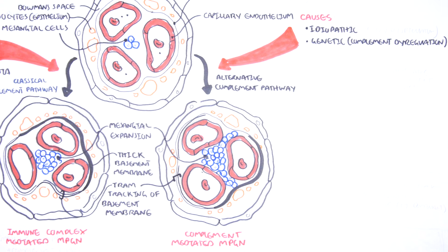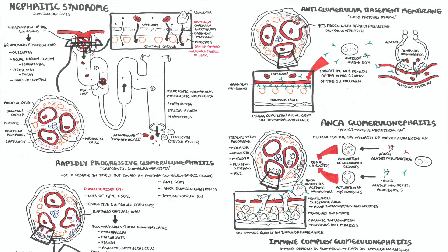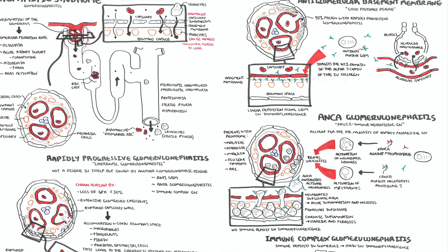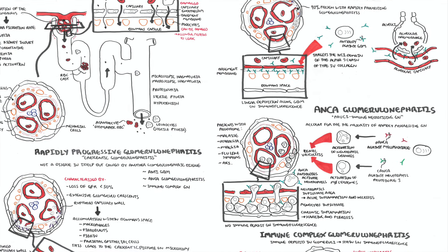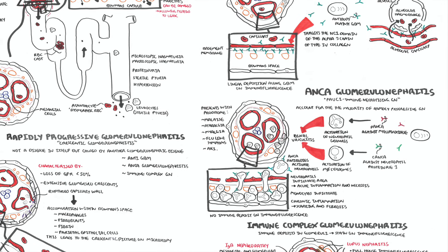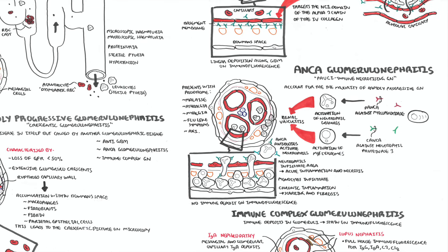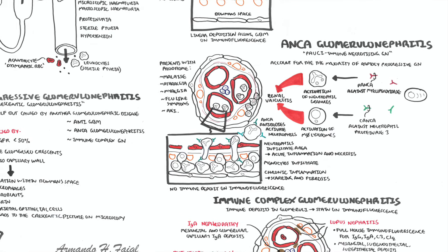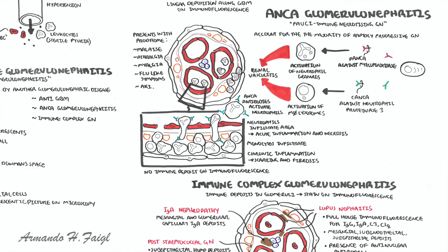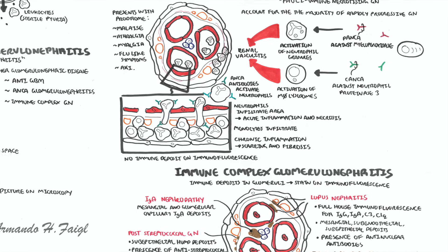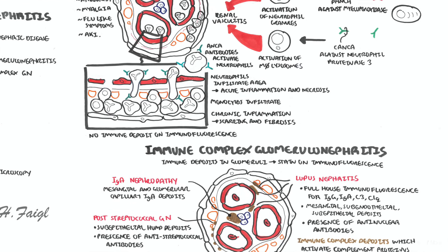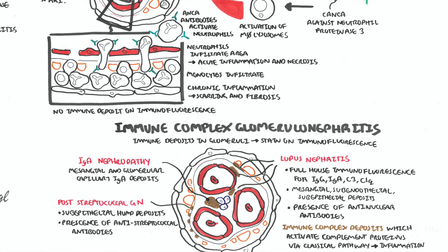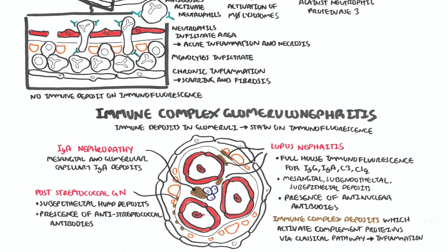That concludes the video on glomerulonephritis, which is nephritic syndrome, not nephrotic syndrome. The main types discussed are rapidly progressive glomerulonephritis — the most severe form, caused by other nephritic conditions — Goodpasture syndrome (anti-glomerular basement membrane disease), ANCA-associated glomerulonephritis, immune-complex-mediated glomerulonephritis, and finally membranoproliferative glomerulonephritis, which shares both nephritic and nephrotic features.